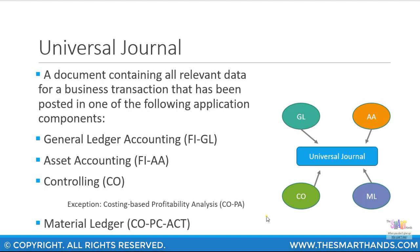In the SAP ERP system you have separate line item tables for general ledger — the BSEG table — asset accounting in the ANEP and ANLC tables, controlling in the COEP and COEJ tables, and material ledger with the MSEG table. These are multiple different line item tables. However in S/4HANA, one universal journal table called ACDOCA contains all of these modules' information.